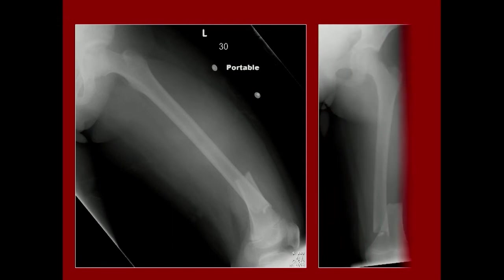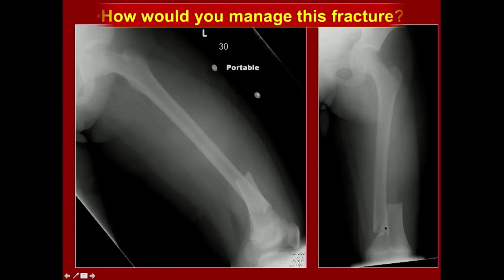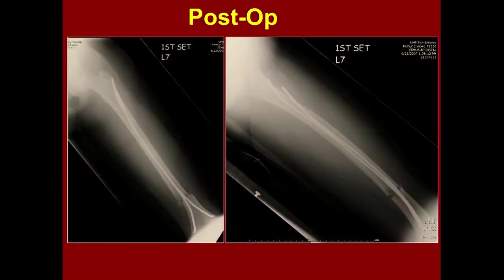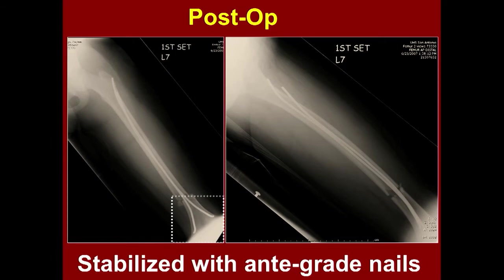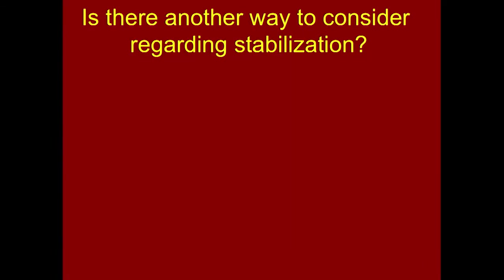Here's another case — a distal diaphyseal-metaphyseal junction fracture. You don't have a lot of fixation in the distal fragment. This one would also be managed with pins. This patient has good separation just above the physis.